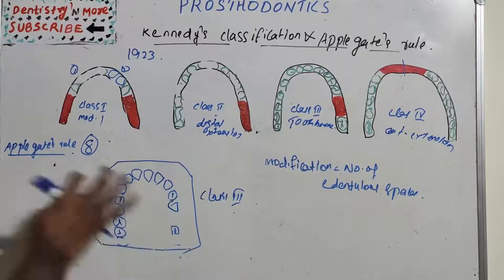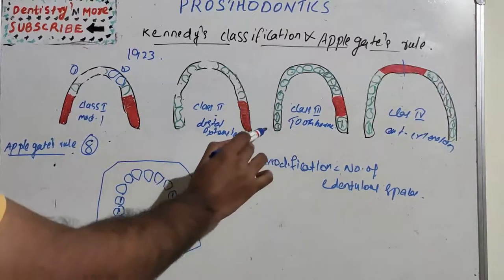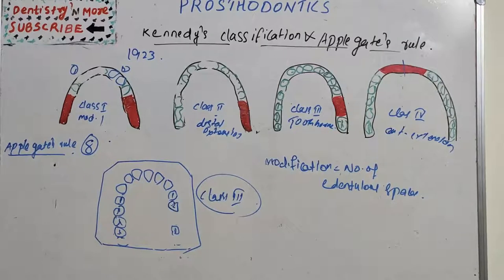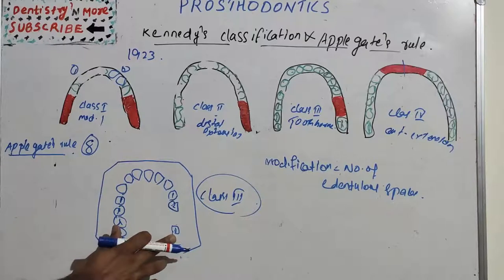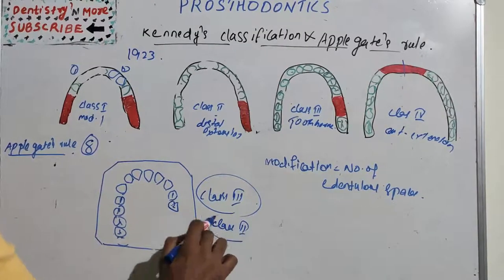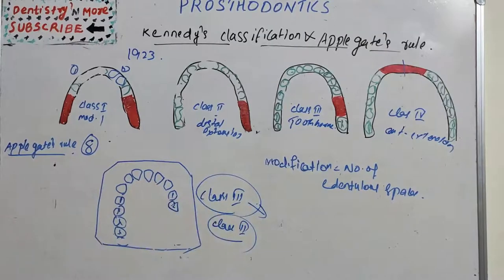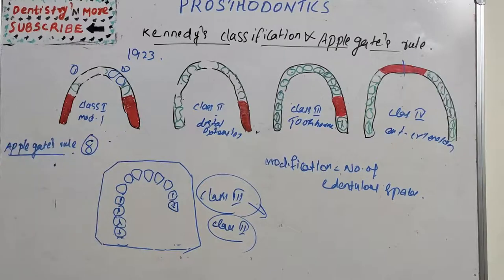For example, if you see an upper arch where an area is Class 3 and plan treatment accordingly, then later find that the bone support is insufficient for a remaining tooth and extract it, it becomes Class 2. To avoid confusion in both treatment plan and classification, extraction should come first, then classification. That is why the rule states classification should follow rather than precede extraction.